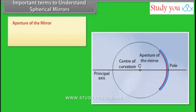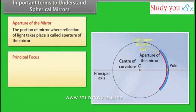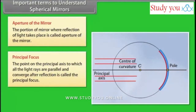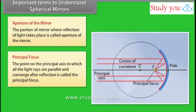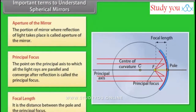The aperture of the mirror is the portion of the mirror where reflection of light takes place. The principal focus is the point on the principal axis to which all the light rays parallel to the axis converge after reflection. The focal length is the distance between the pole and the principal focus.